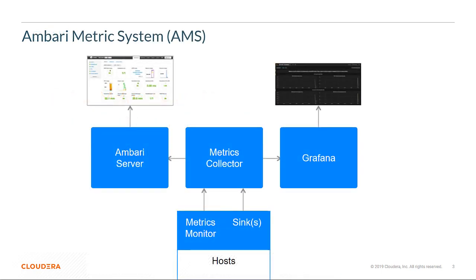Ambari Metrics is a system for collecting, aggregating and serving metrics for various services in an Ambari-managed cluster. AMS has four components: Metrics Monitors, Hadoop Sinks, Metrics Collector, and Grafana.